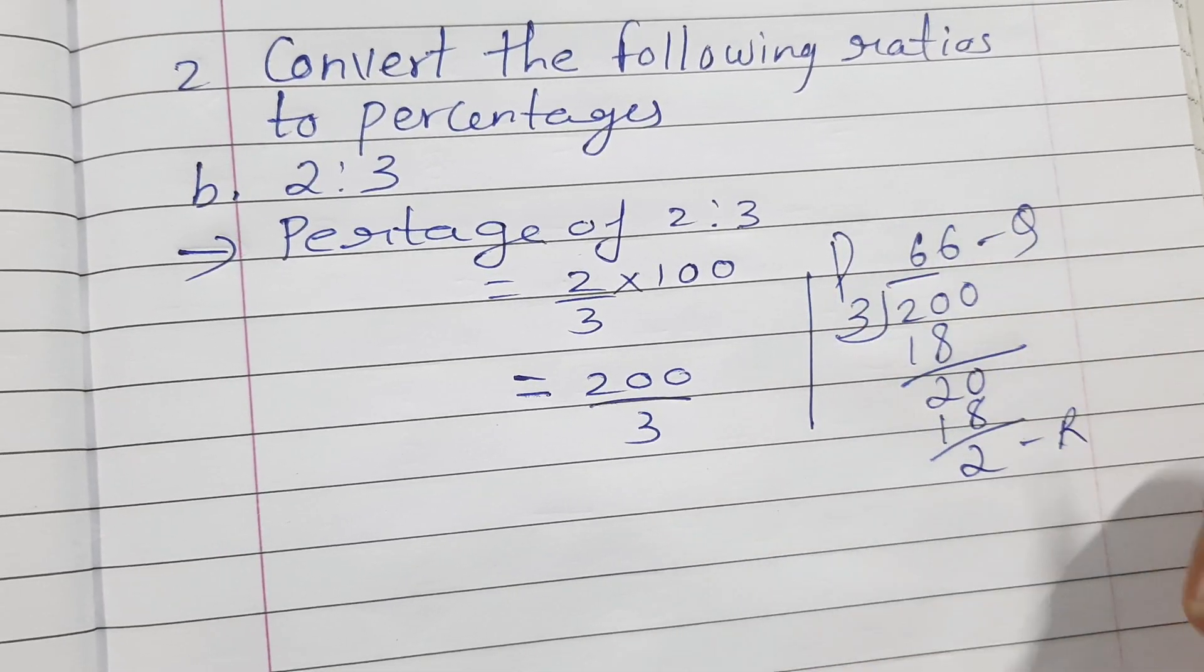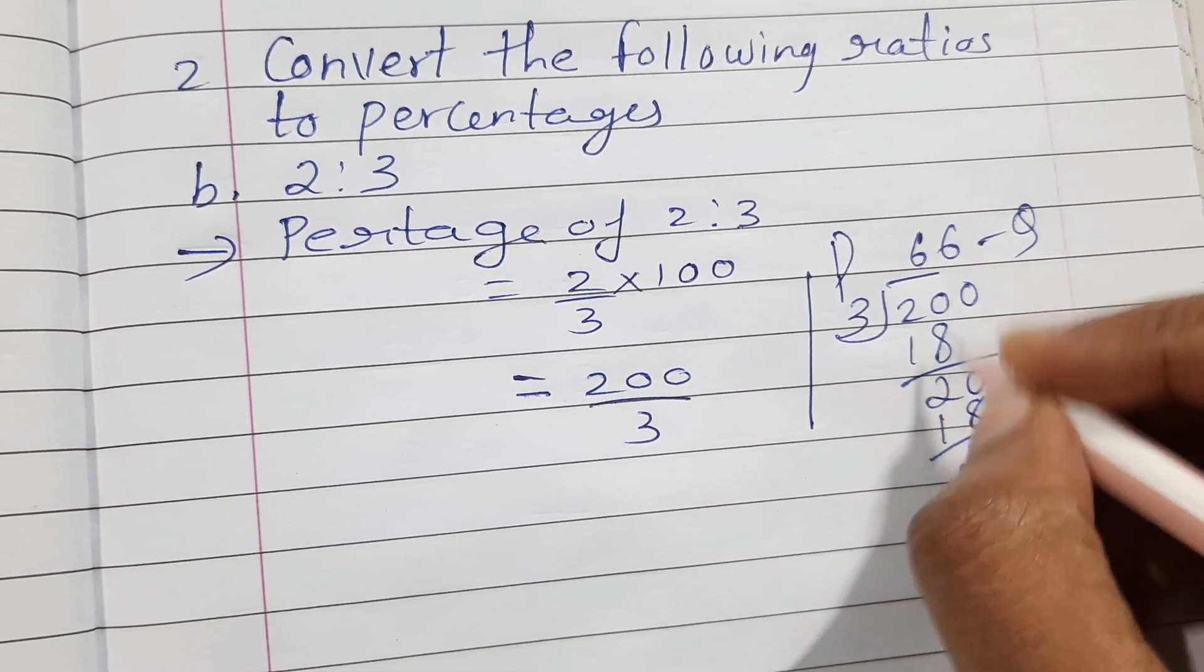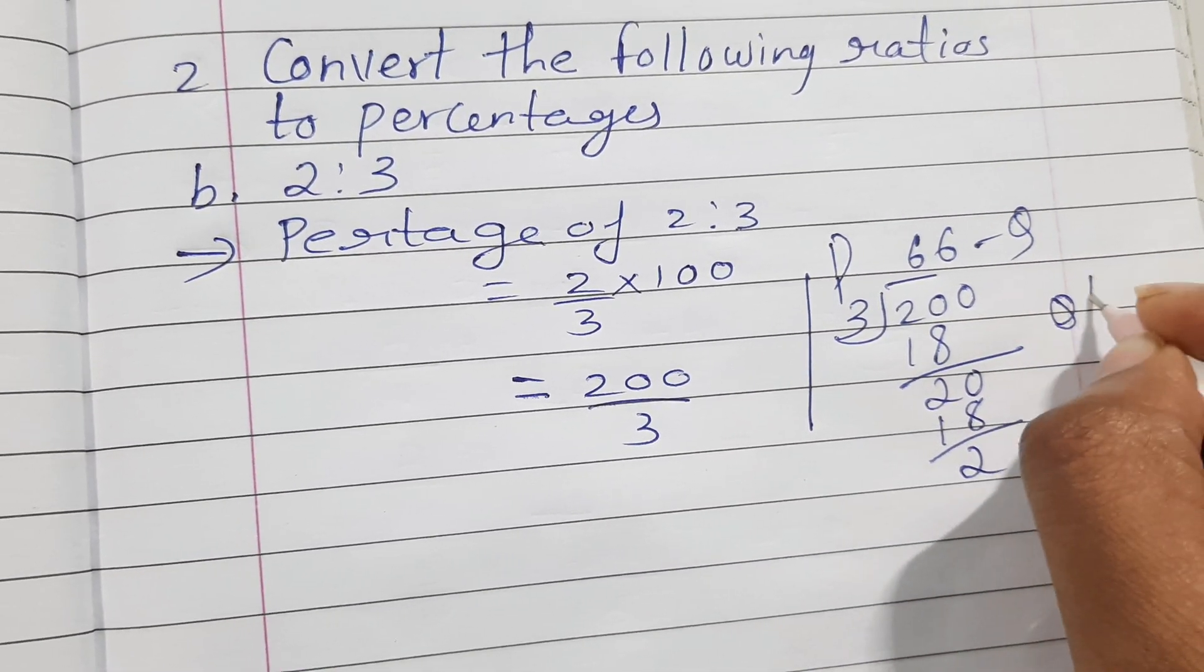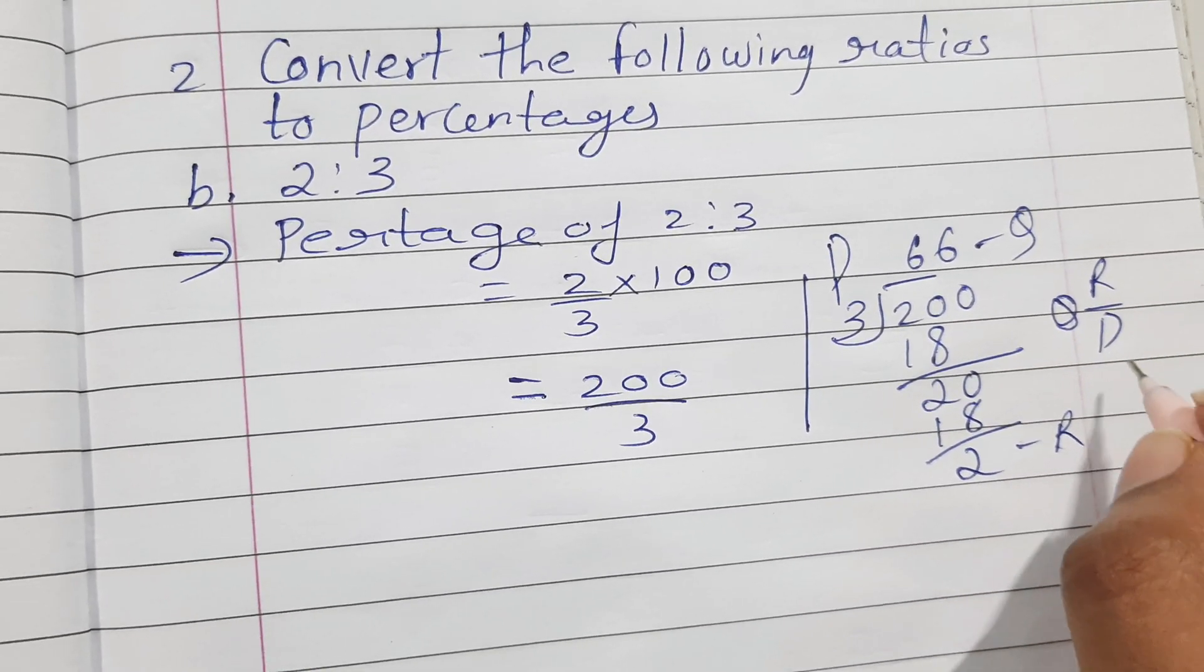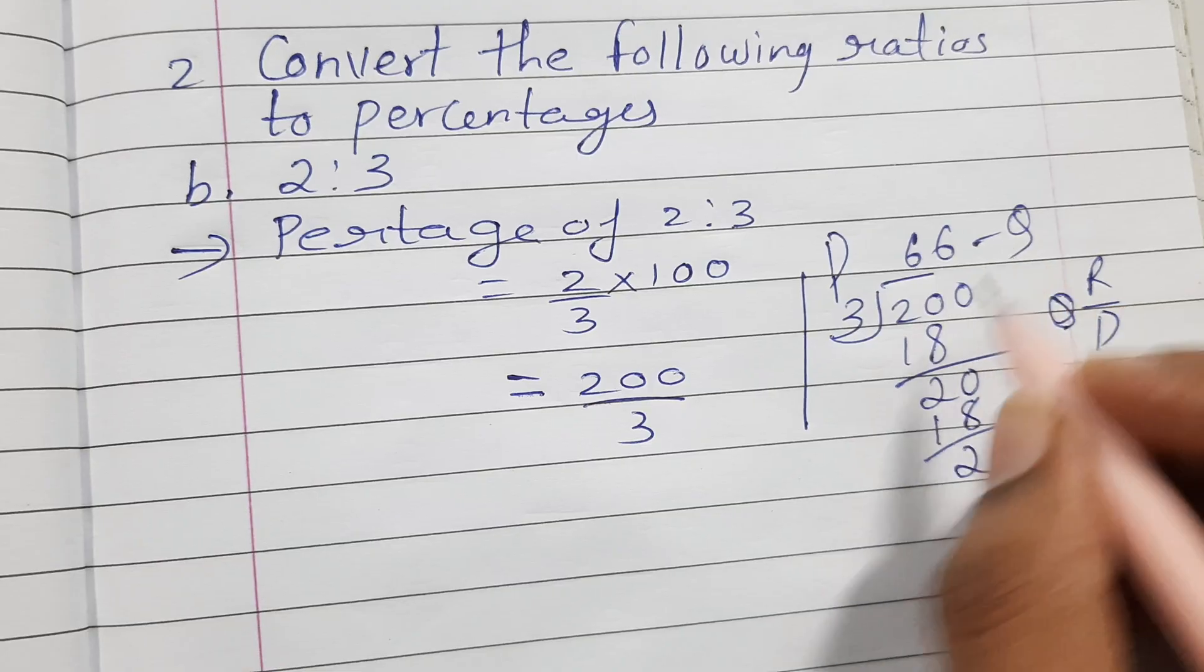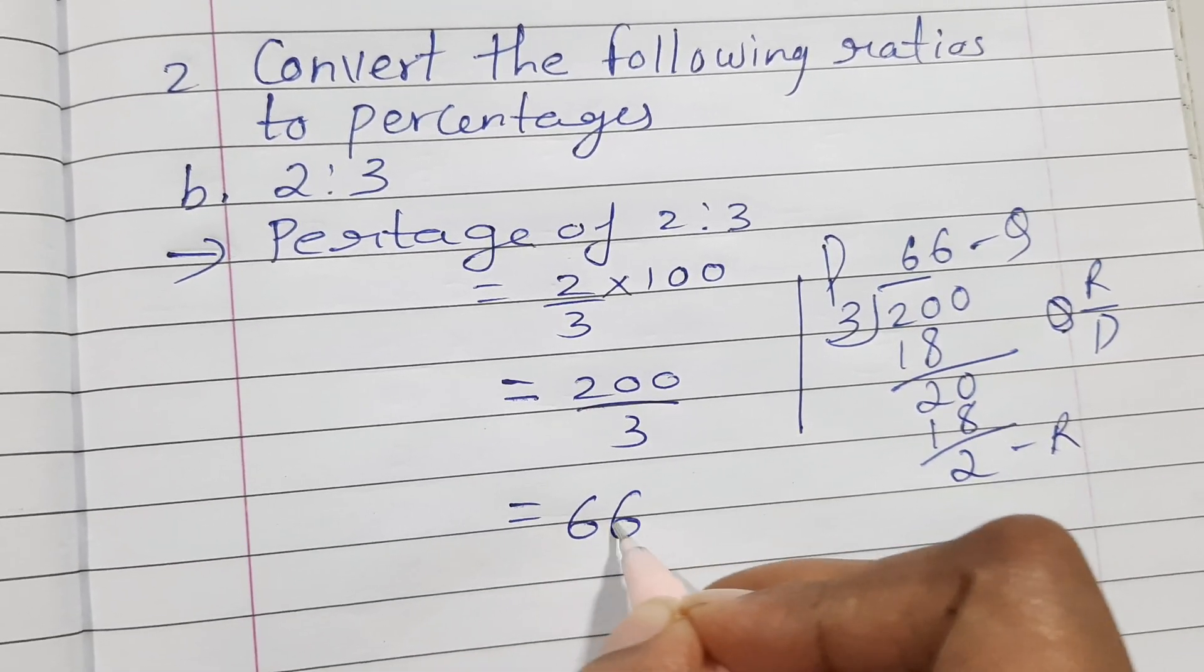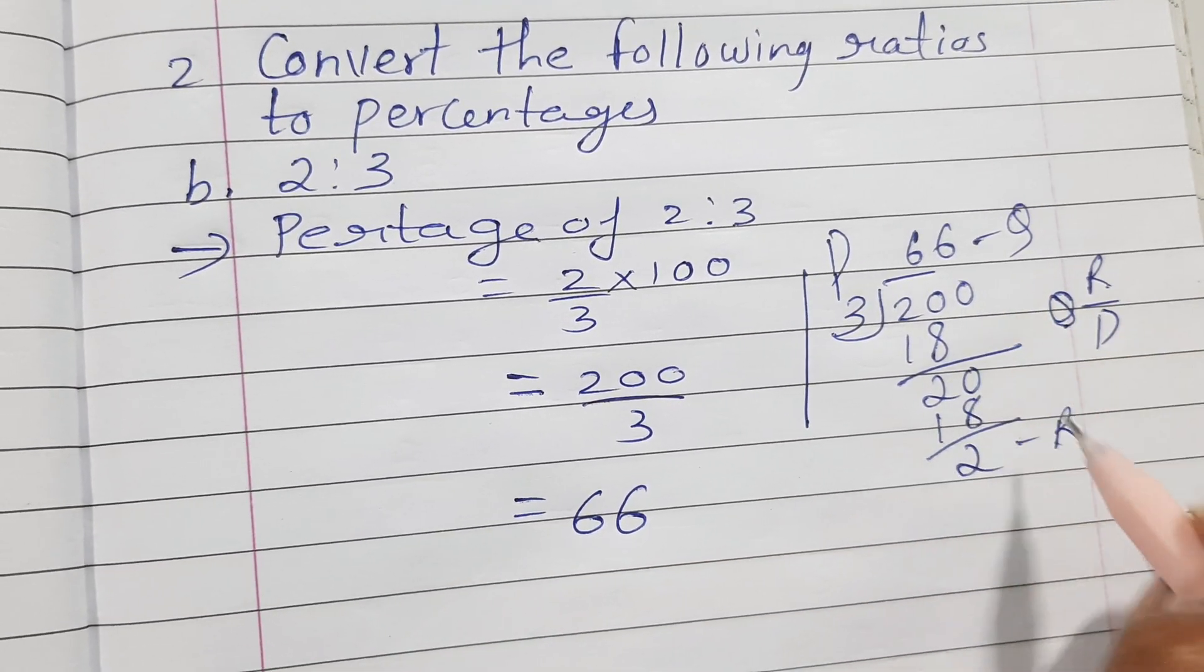So mixed fraction is in the form of quotient remainder upon divisor. So here as you all know that your quotient is 66, so write down 66. Your remainder is 2 upon your divisor is nothing but 3 percent.